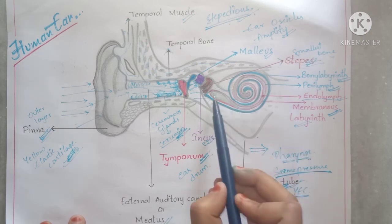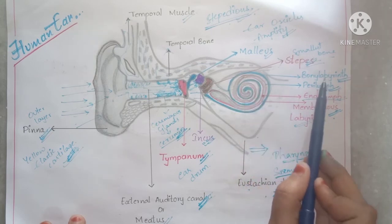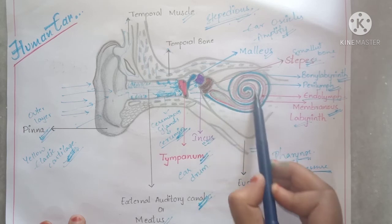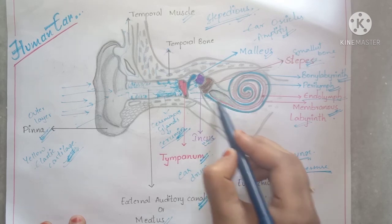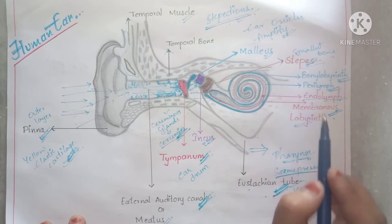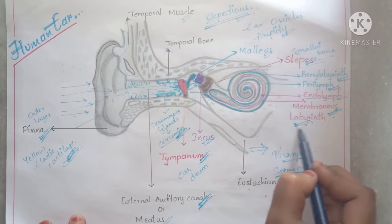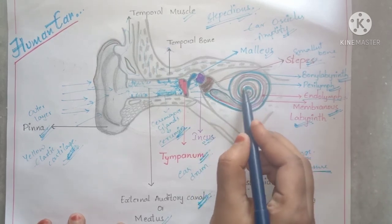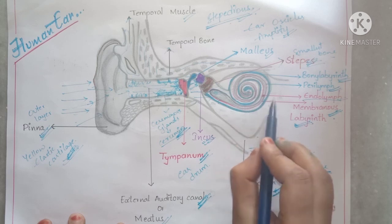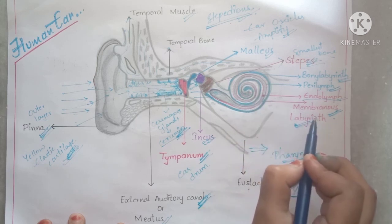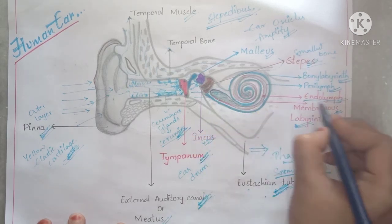The inner ear's tube-like structure is called the bony labyrinth, and the liquid inside it is called perilymph. The membranous labyrinth fits inside the bony labyrinth like a balloon and takes the same shape. The liquid present inside the membranous labyrinth is called endolymph.